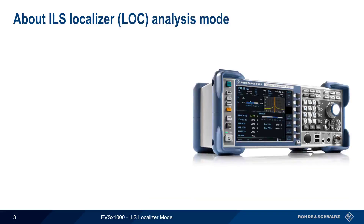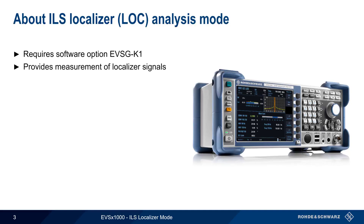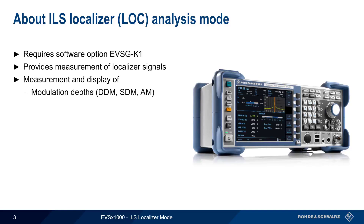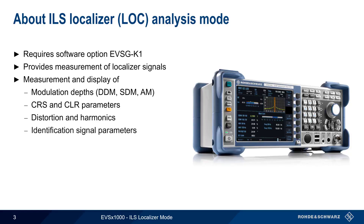ILS localizer analysis is enabled by software option K1 and provides a wide variety of measurements of localizer signals. These measurements include various modulation depth measurements, individual and combined measurements of course and clearance, various distortion and harmonics measurements, and information on the COM/ID signal. Measurement data can also be recorded for viewing on the EVS1000 or exported for external analysis.